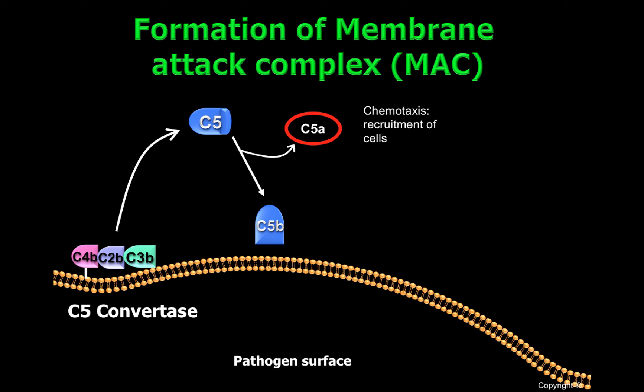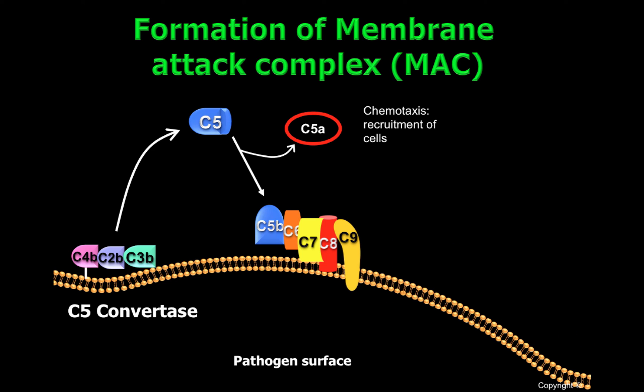C5A is a potent chemoattractant molecule able to recruit neutrophils to the site of the infection. C5B can be recognized by C6 and C7. This complex, C5B-C6 and C7, will be able to bind to the surface of pathogens. Then C8 will be inserted into the cell membrane of pathogens, leading to the recruitment and polymerization of C9. Many molecules of C9 will generate a pore in the cell surface of pathogens.